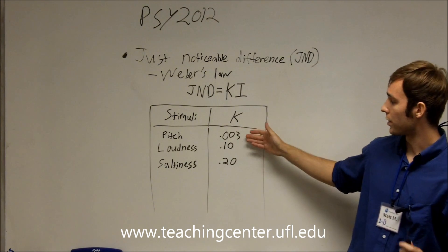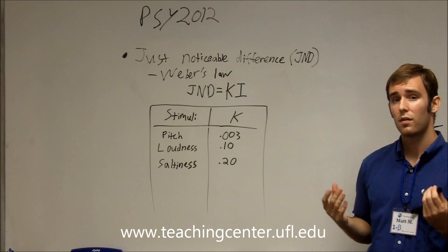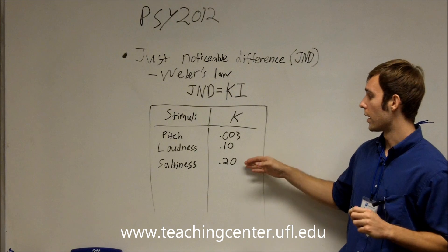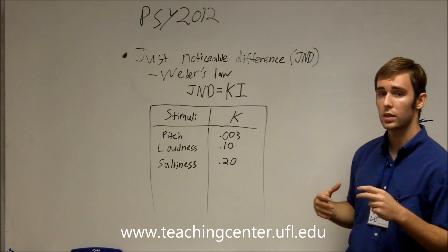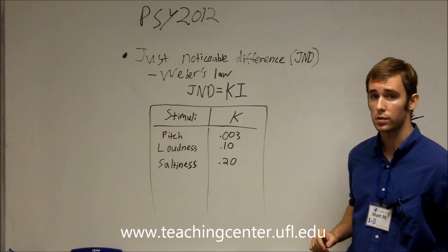We can see that the constant for pitch is really small. So, if someone's a little bit off-key when they're singing, we're going to be able to tell. Whereas, stuff like loudness and saltiness have a much bigger constant associated with them.